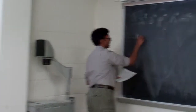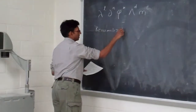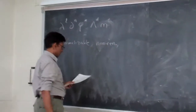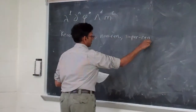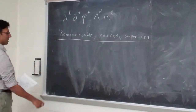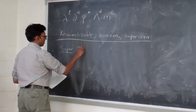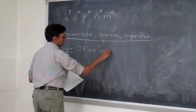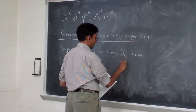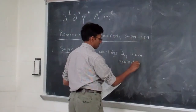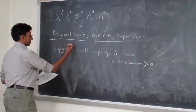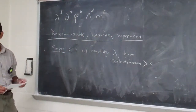What I want to show you right now is the categorization of theories as renormalizable — having the same features as the lambda phi-to-the-fourth theory I went through — non-renormalizable, and super-renormalizable. Let's do super-renormalizable. If all couplings in your theory have strictly positive scale dimension or mass dimension, that is the super-renormalizable case.